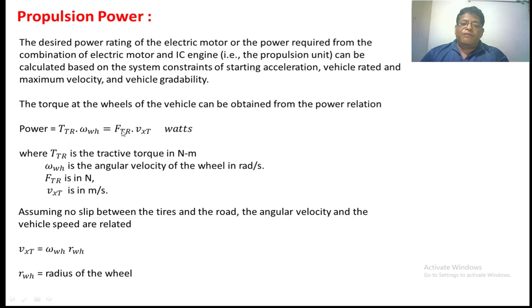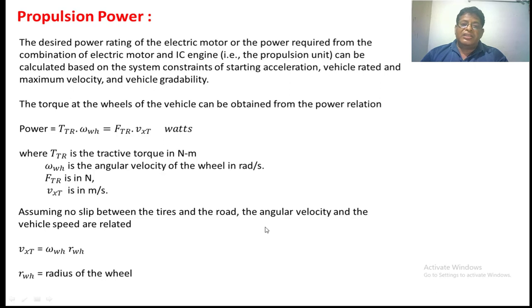Power also equals Ftr dot Vx, where Ftr is the tractive force and Vx is the velocity of the vehicle in the tangential direction. Assuming no slip between the tires and the road, we can relate angular velocity and linear velocity: Vxt equals omega_wh times r_wh, where r_wh is the radius of the wheel.